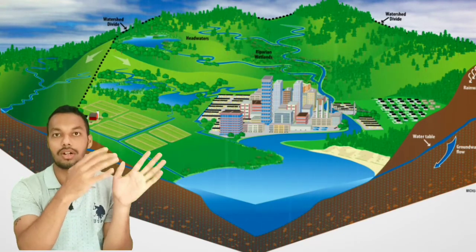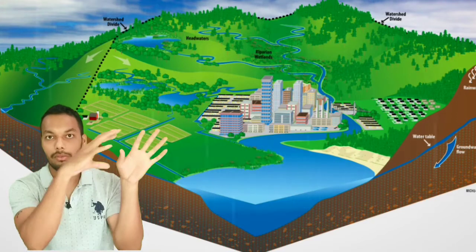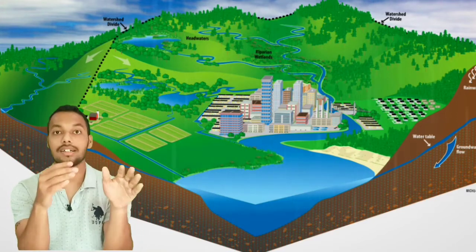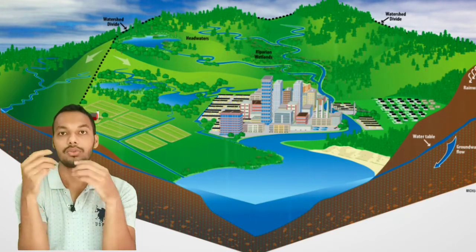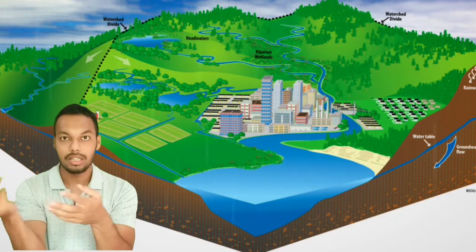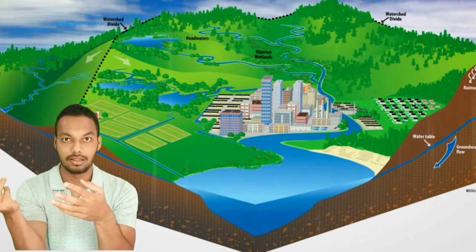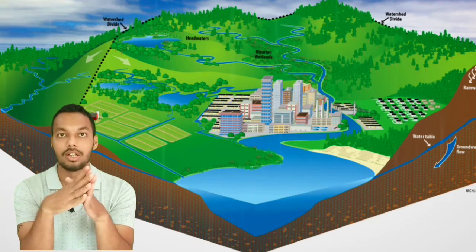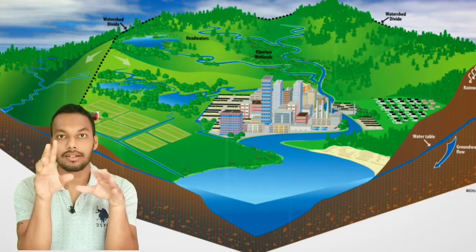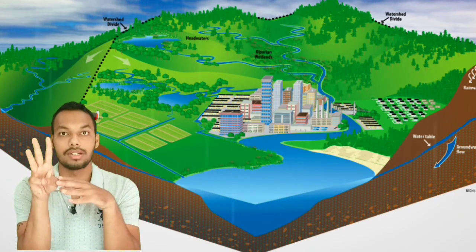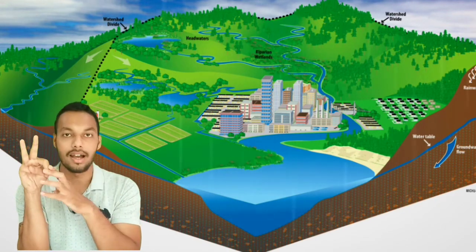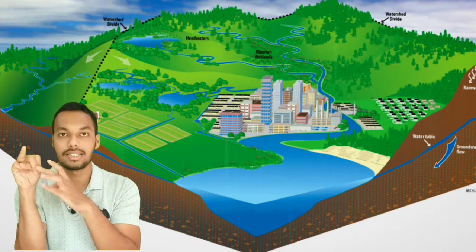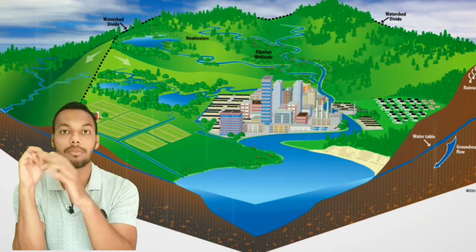That runoff water we collect and store, and then we provide irrigation facilities in the common area. There are three components of a watershed: one is the catchment area, another is the basin, and another is the common area.